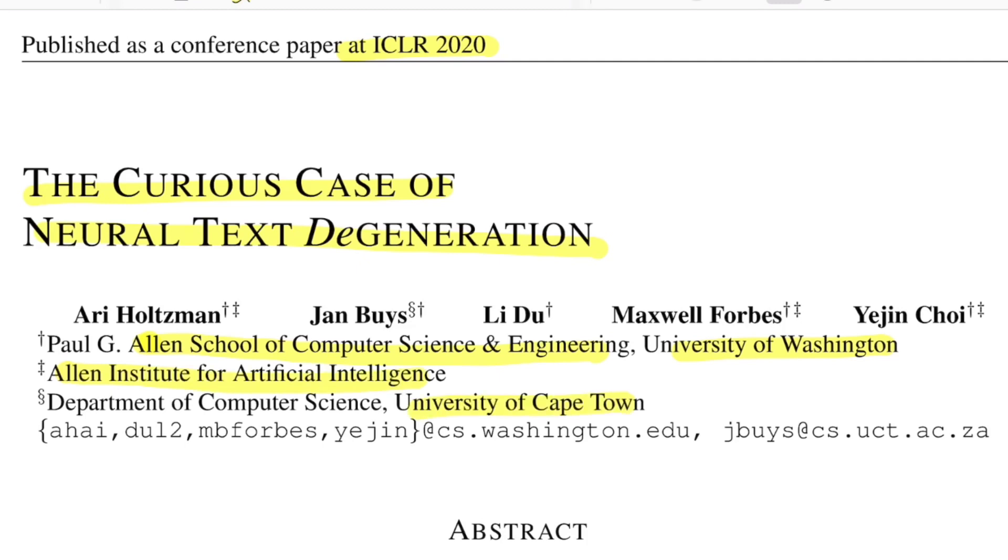So at very high level, the paper introduces a new decoding strategy for text generation systems called Nucleus Sampling. It's also called TopP Sampling.